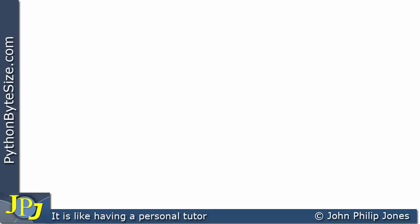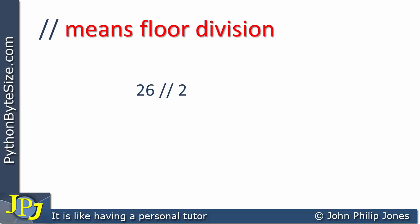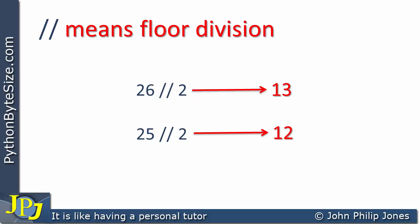Python has something called floor division, represented by two forward slashes. So 26 floor-divided by 2 gives 13. For 25 floor-divided by 2, we know the result is 12 and a half, but floor division returns 12 — it discards the decimal part, the 0.5. Floor division is something we're going to use in our upcoming programs.